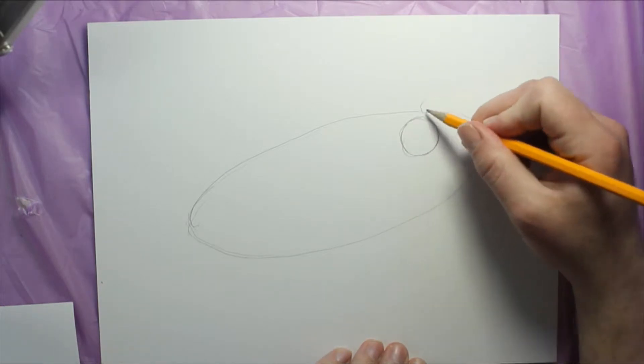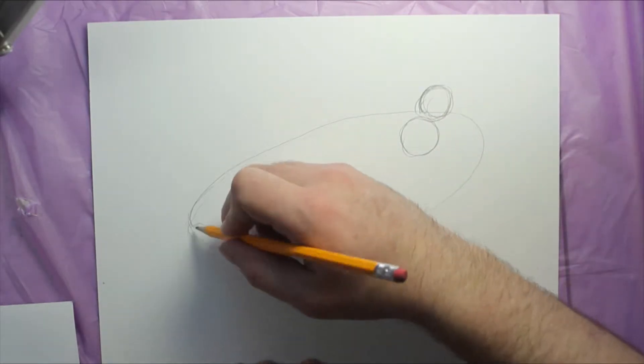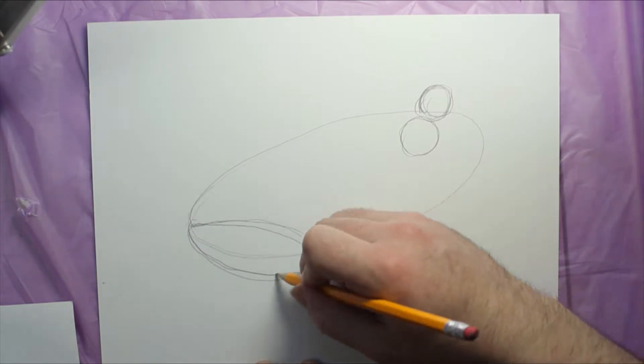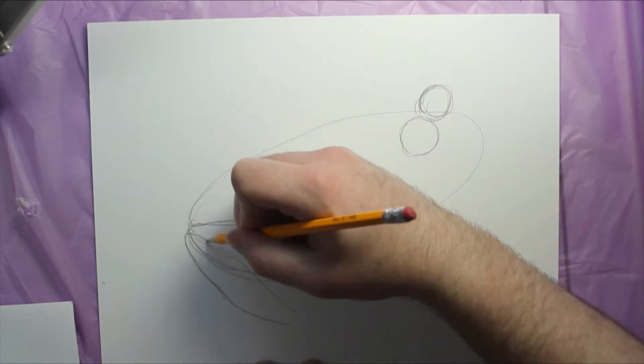How to draw a frog easy. To start with the body, draw an oval that has an angle to it.